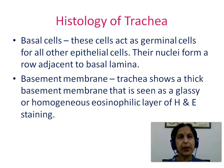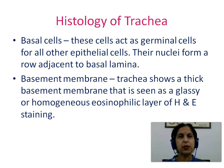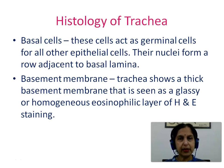Basal cells: these cells act as germinal cells for all other epithelial cells. Their nuclei form a row adjacent to the basal lamina. The trachea shows a thick basement membrane that is seen as a glassy or homogeneous eosinophilic layer on H&E staining.